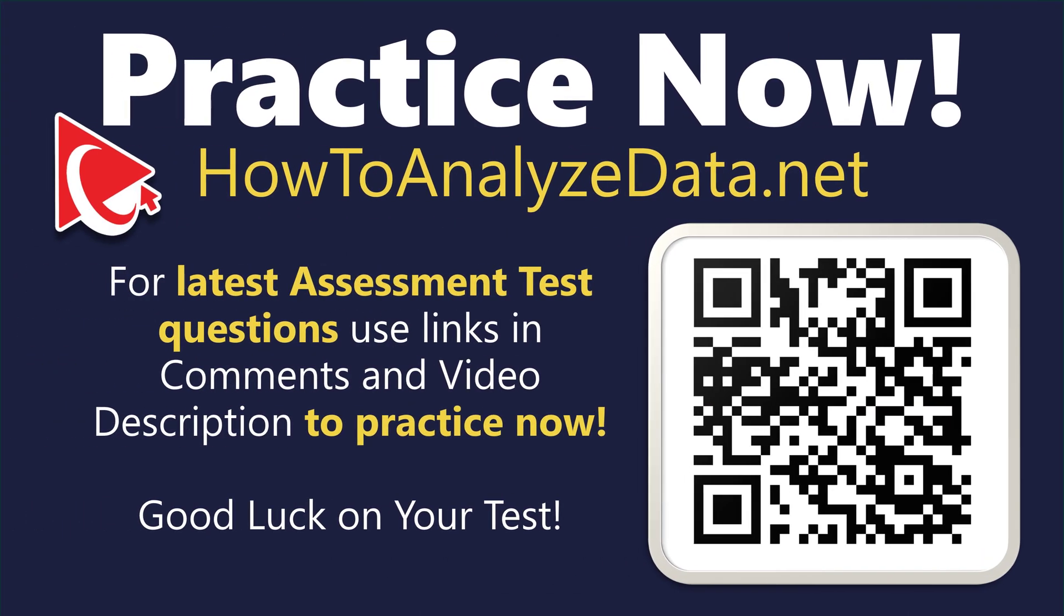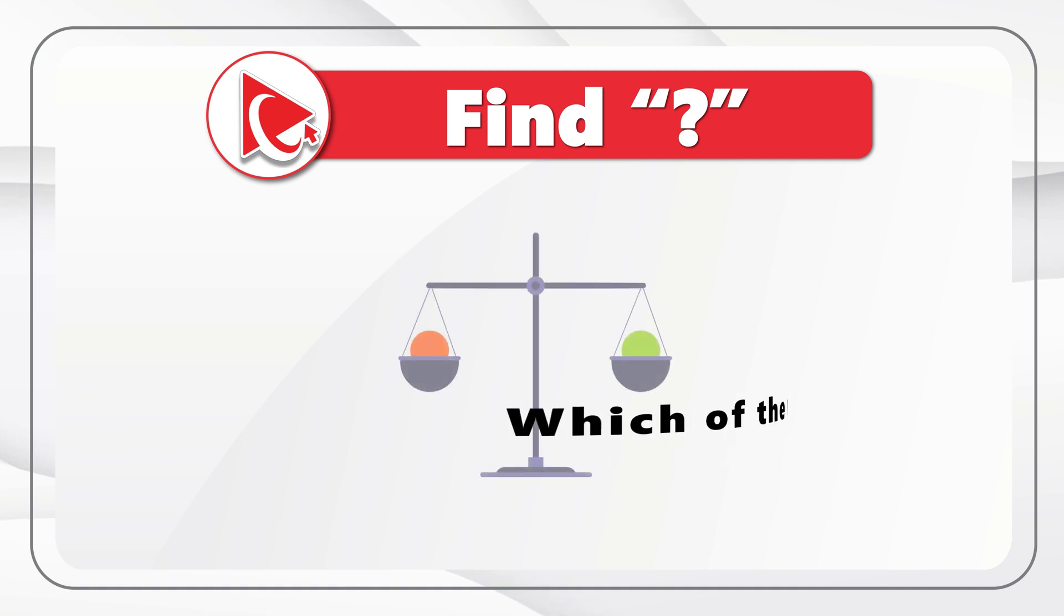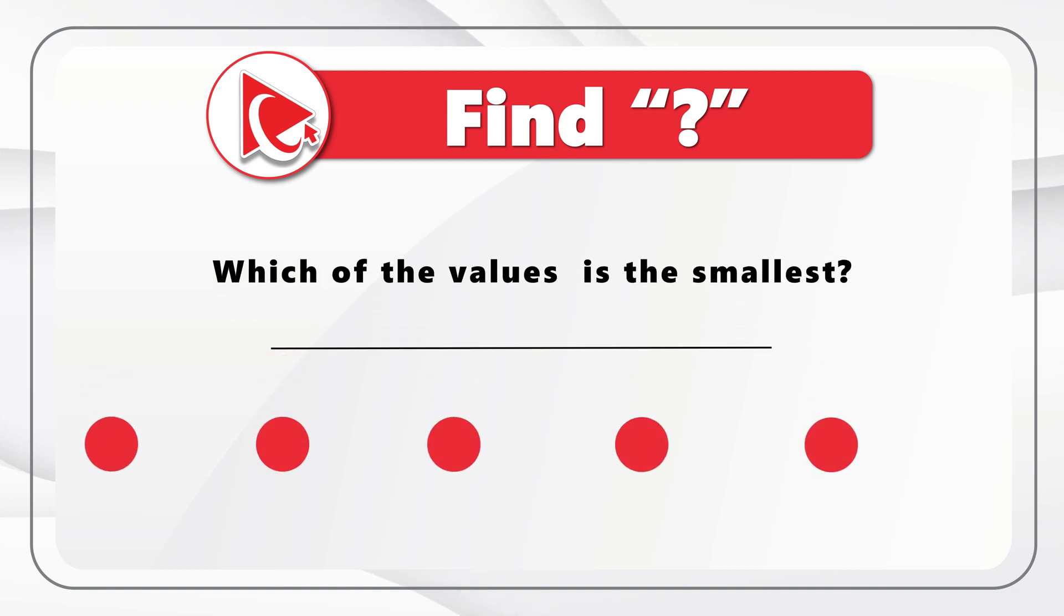Here is one of my favorite questions to test your analytical skills and attention to details. You need to determine which of the values is the smallest. And you're presented with 5 different values. The choices are A, 3/4. Choice B, 0.6. Choice C, 7/12. Choice D, 0.7. And last but not least, choice E, 4/5. Take a close look to see if you can come up with the answer.